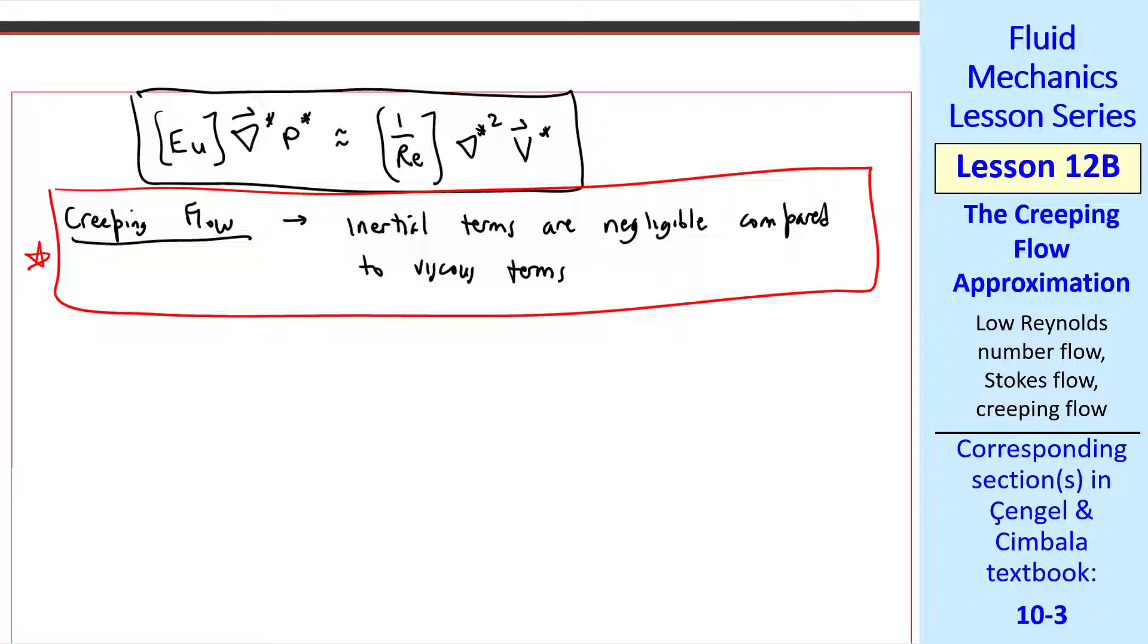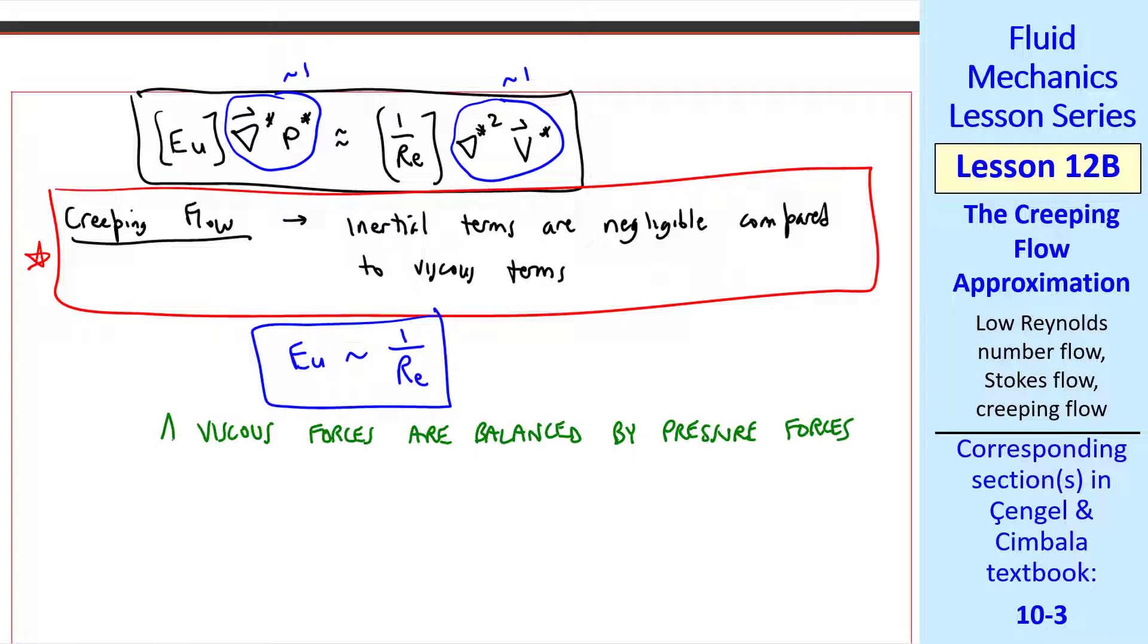Again, since the two starred terms here are of order of magnitude one, the Euler number must be the same order of magnitude as one over Reynolds number so that this equation can be balanced. In other words, viscous forces are balanced by pressure forces.